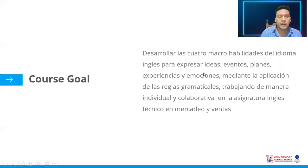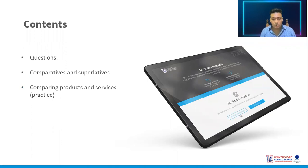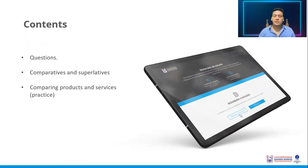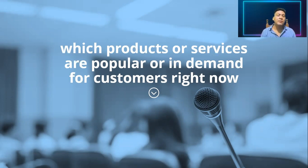These are the contents: first I'm going to ask you capital questions, then we're going to talk about comparatives and superlatives. It is a grammatical question of English and you have to understand them and practice them. The last part is comparing products and services. Which products or services are popular or in demand for customers right now?